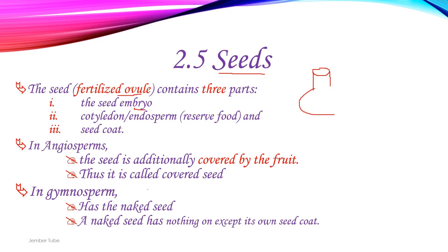In angiosperms, the seed is additionally covered by fruit. Plants are divided into two major categories: the angiosperms and the gymnosperms.